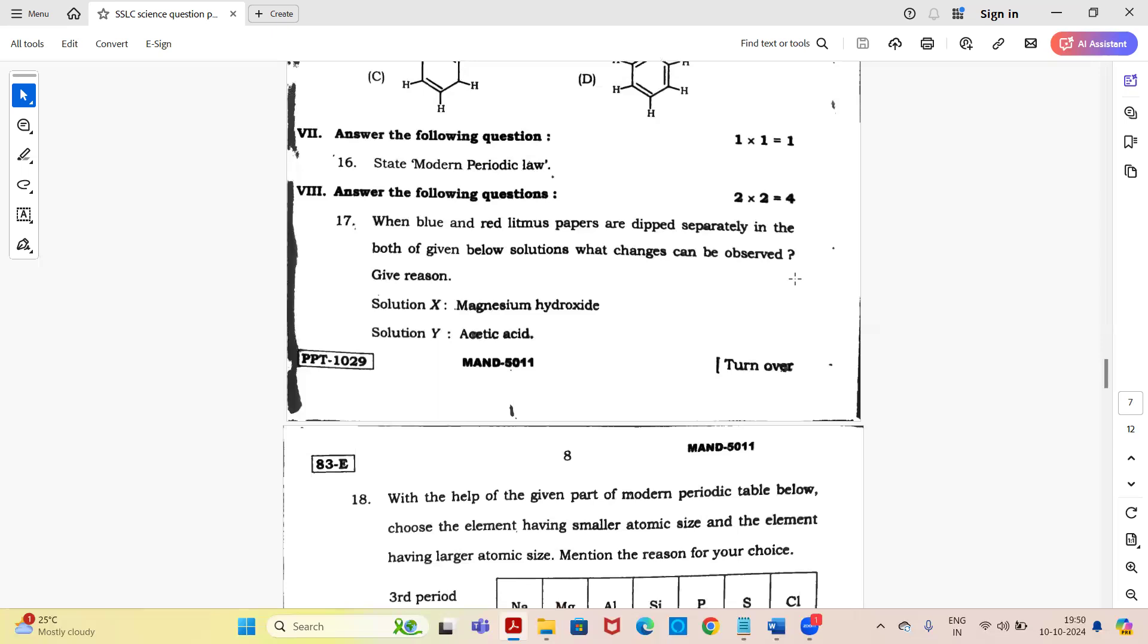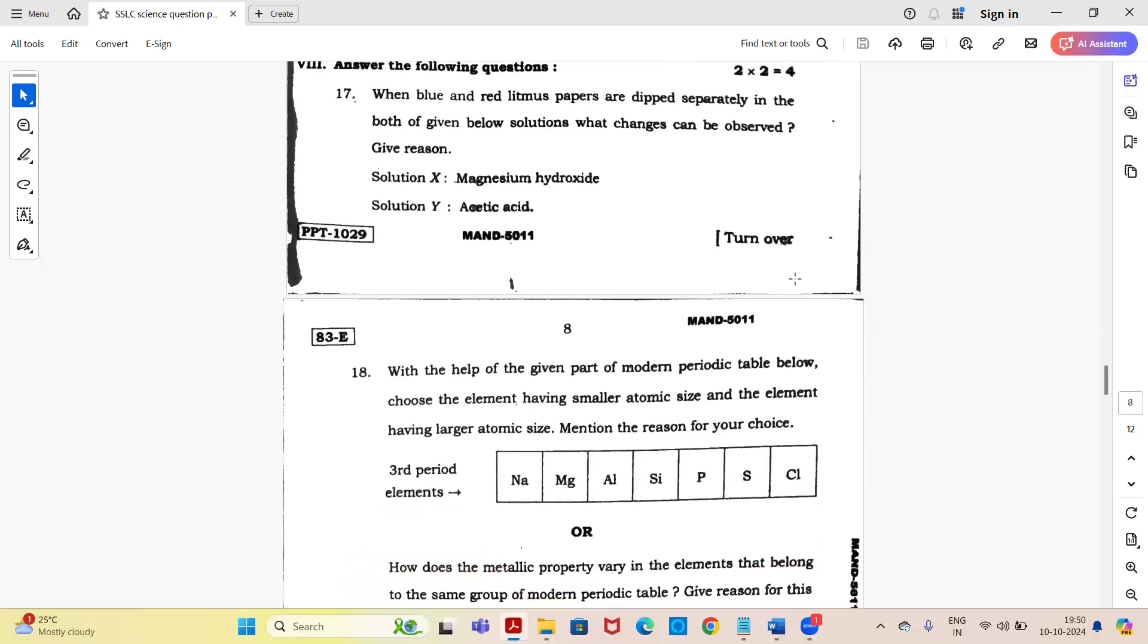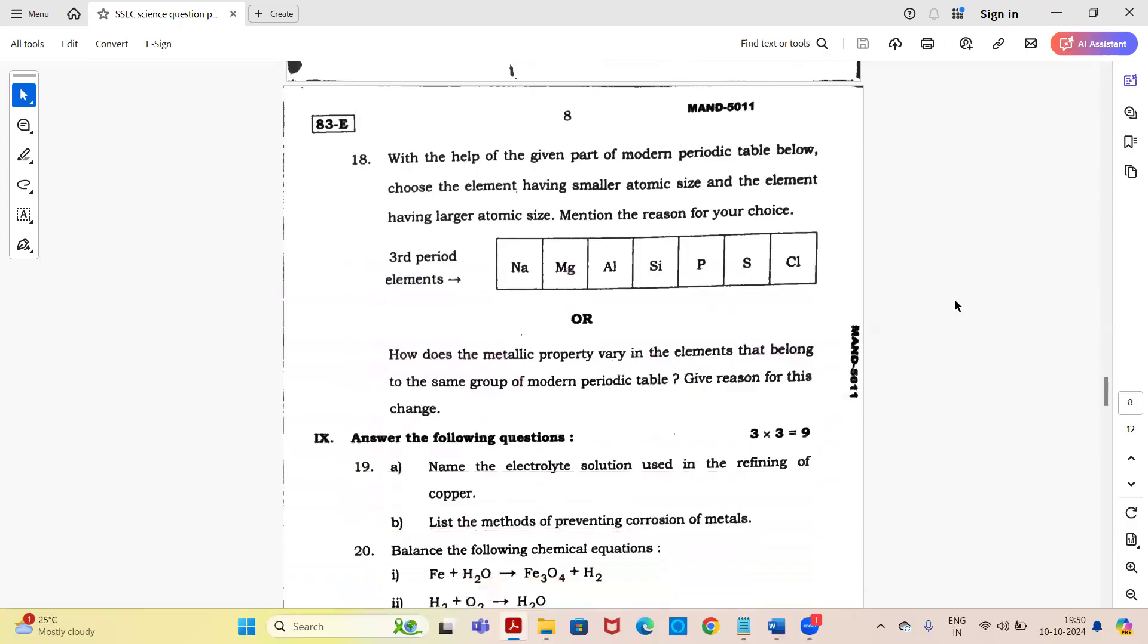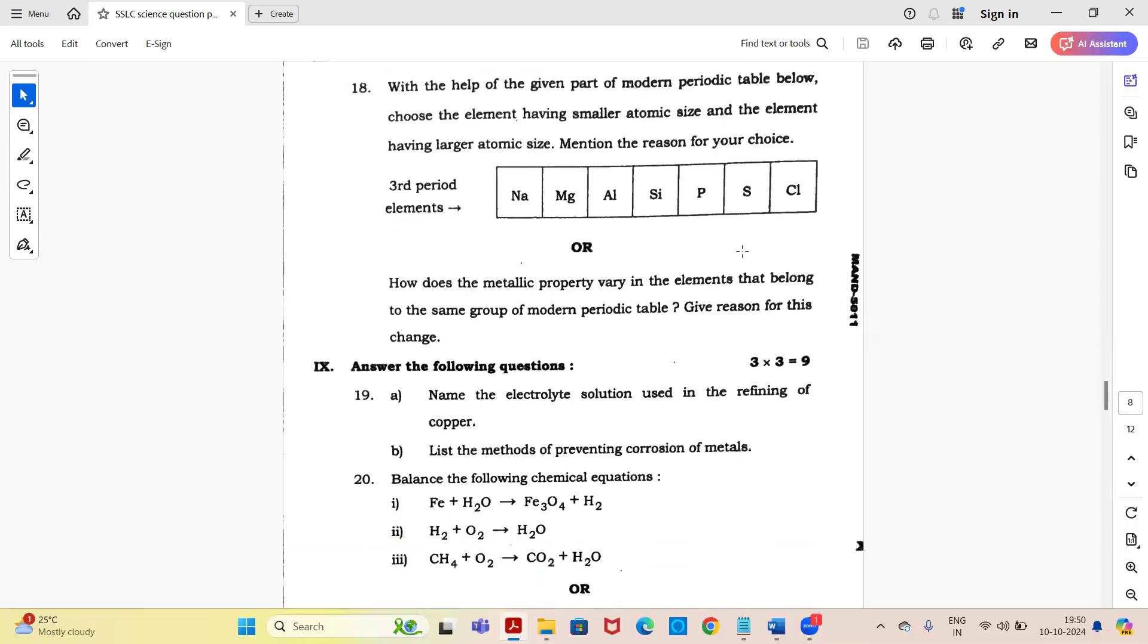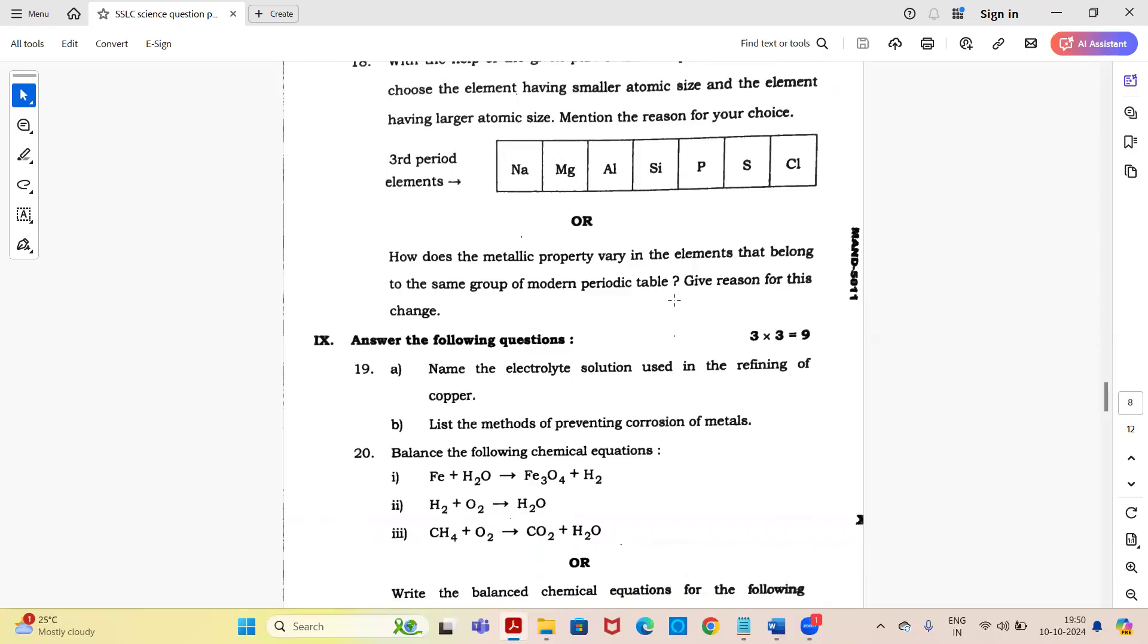Next main, question 17 for two marks each, main is for four marks. When blue and red litmus papers are dipped separately in both of the given solutions, what changes can be observed? Give reason. Solution X: magnesium hydroxide, Solution Y: acetic acid. Question 18: with the help of the given part of modern periodic table below, choose the element having smaller atomic size and element having larger atomic size, mention the reason. Or, how does the metallic property vary in elements that belong to the same group of modern periodic table? Give reason for this change.